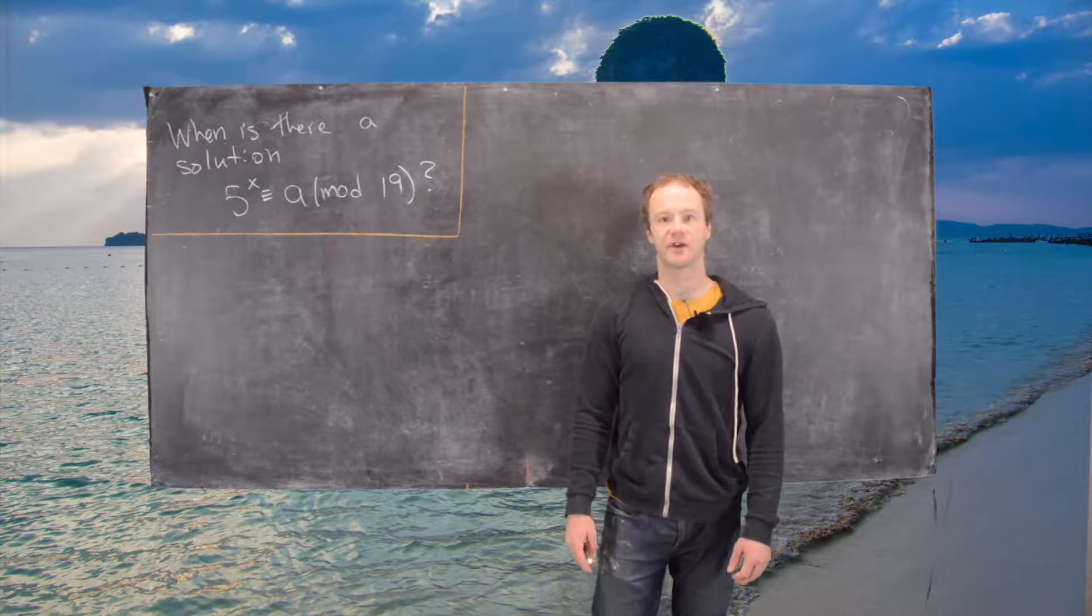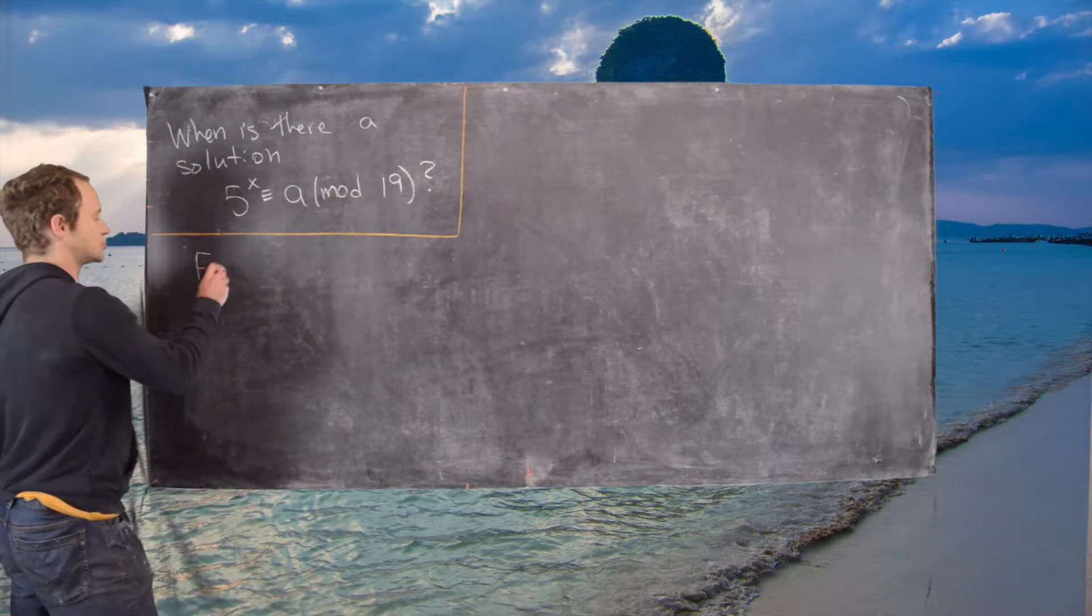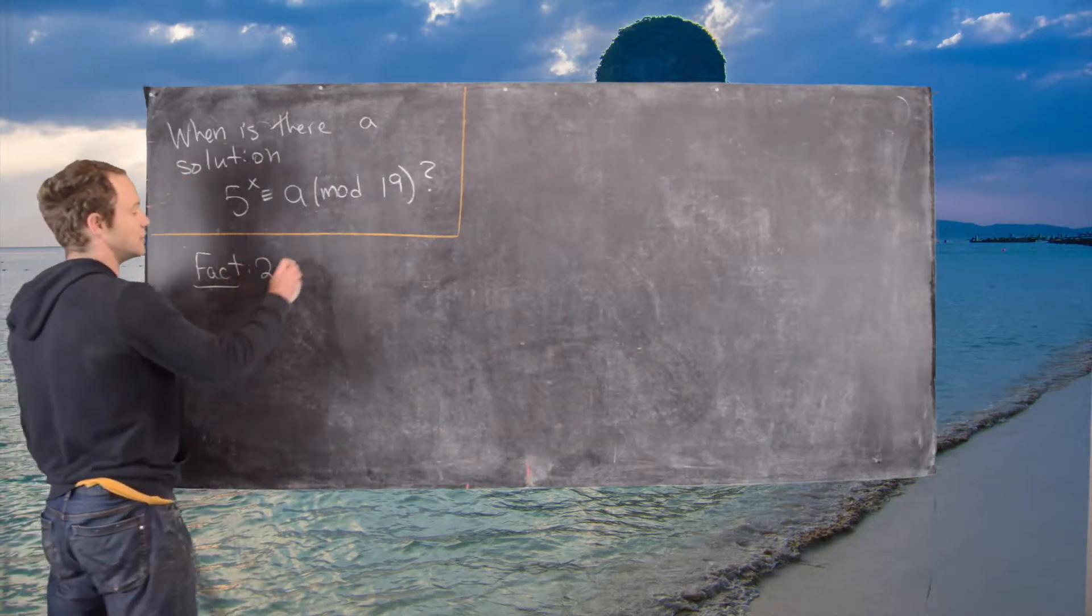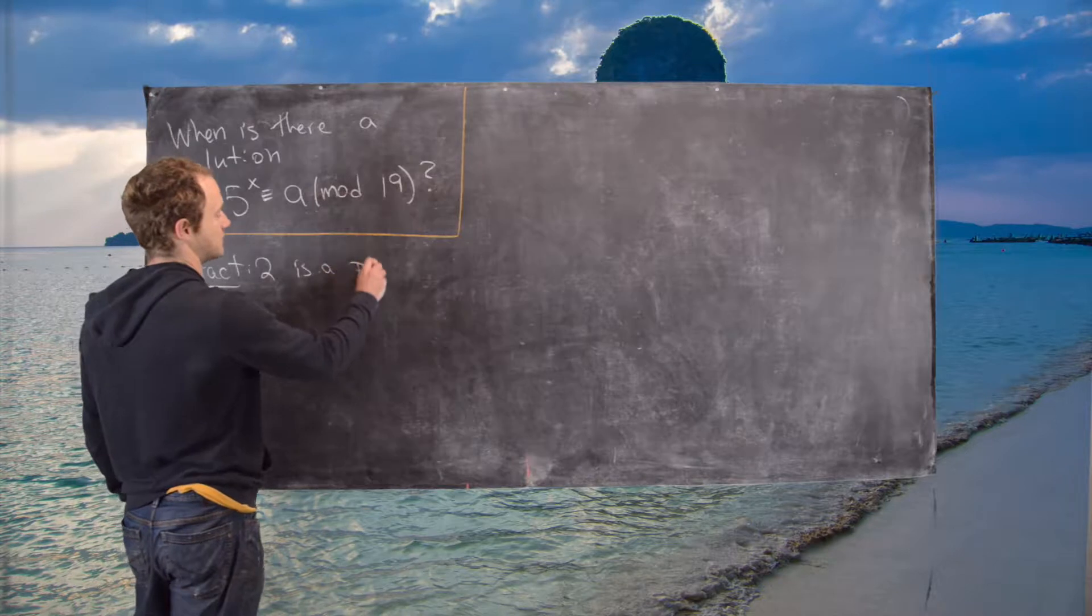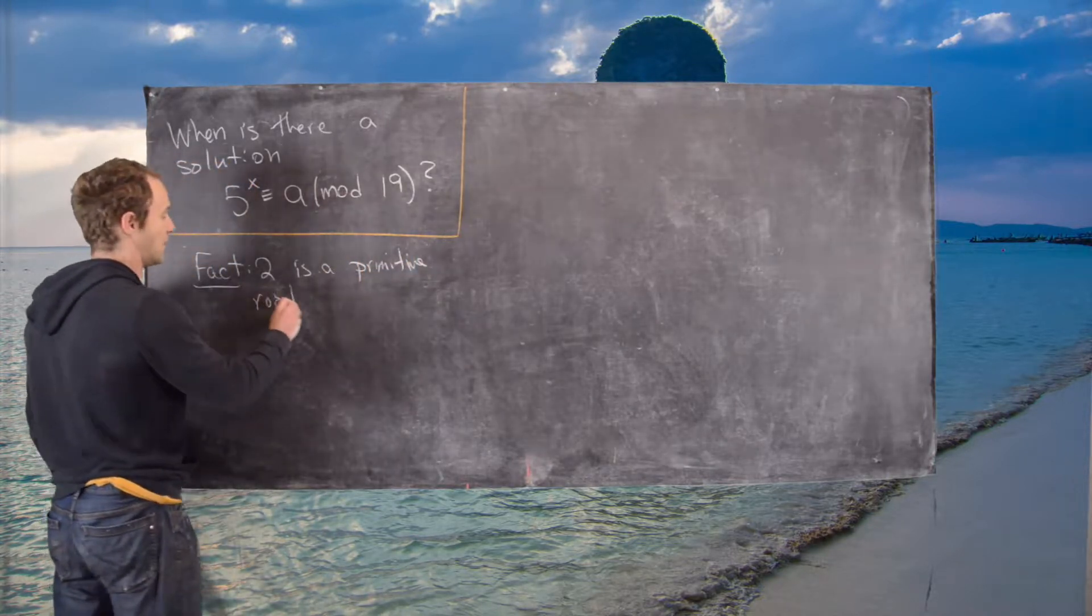And so we're going to use the theory of primitive roots in this case, and I'll just use the following fact which you can check, and that is 2 is a primitive root mod 19.